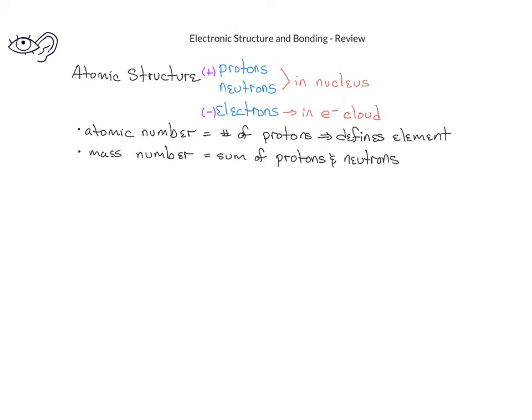Finally, you should recall that isotopes are atoms of the same element that have different numbers of neutrons. In other words, they're atoms that have the same atomic number, but a different mass number.